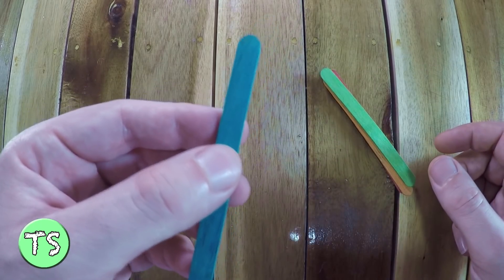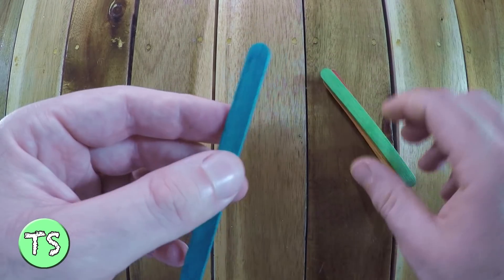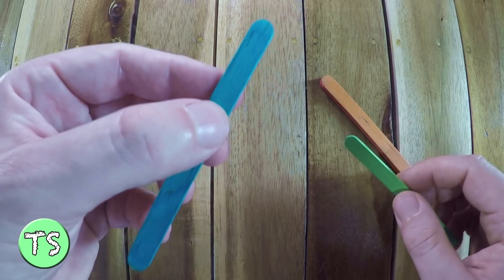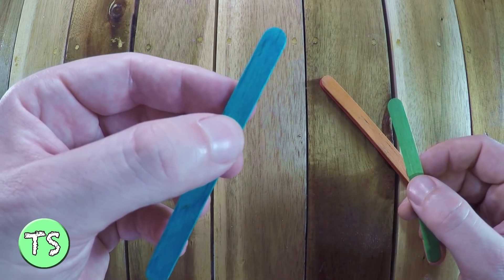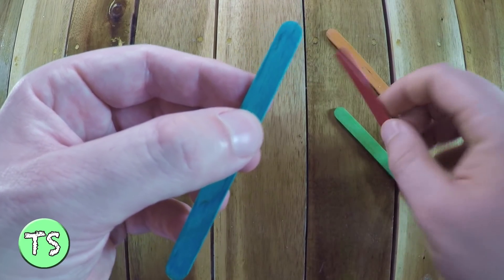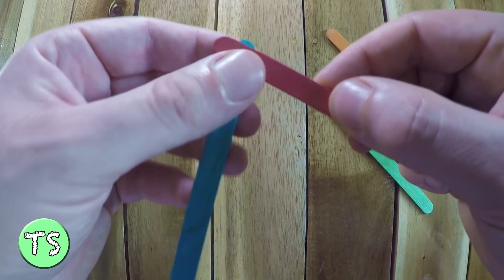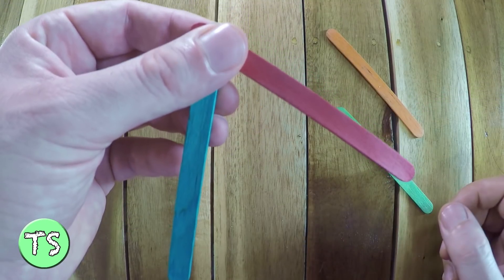Start with one stick in your left hand. I'm using a blue stick. Place a red stick over the blue stick to make an upside down V.